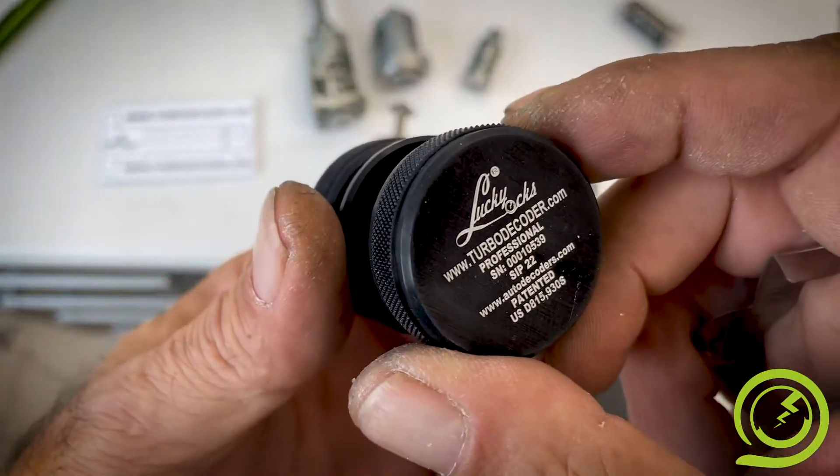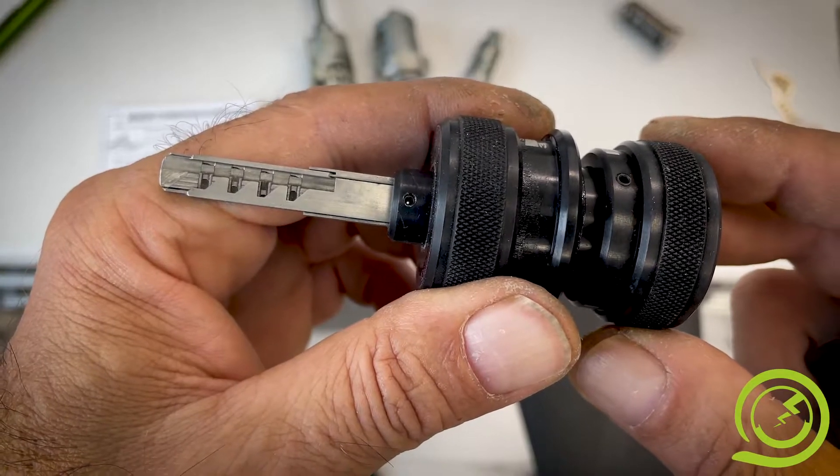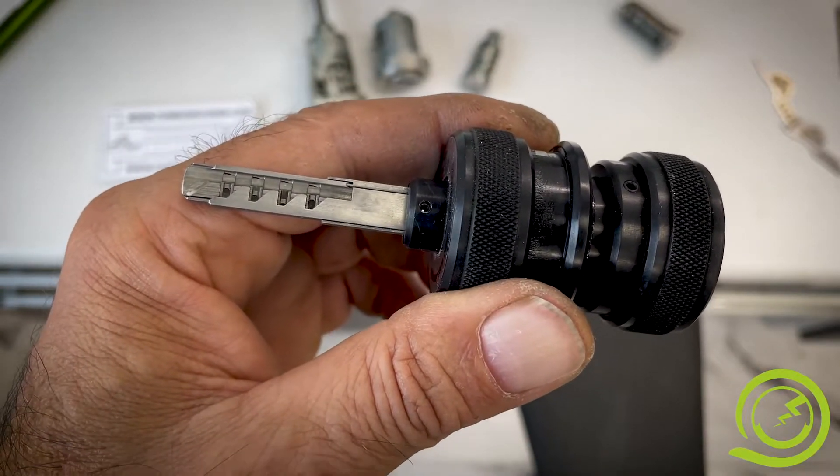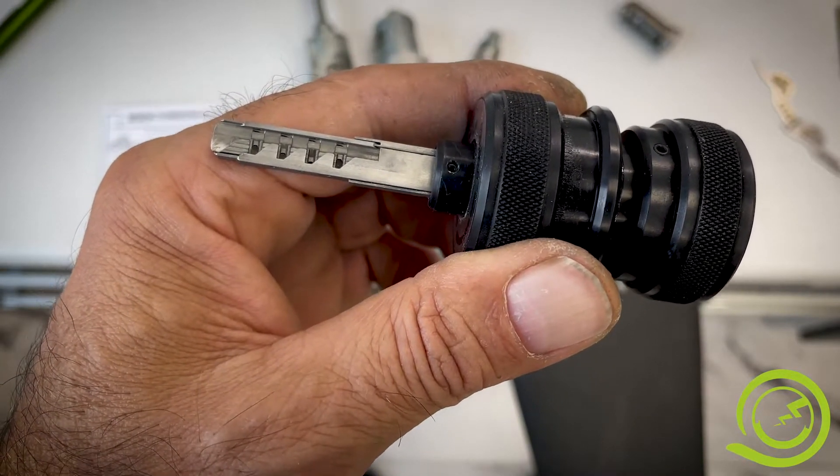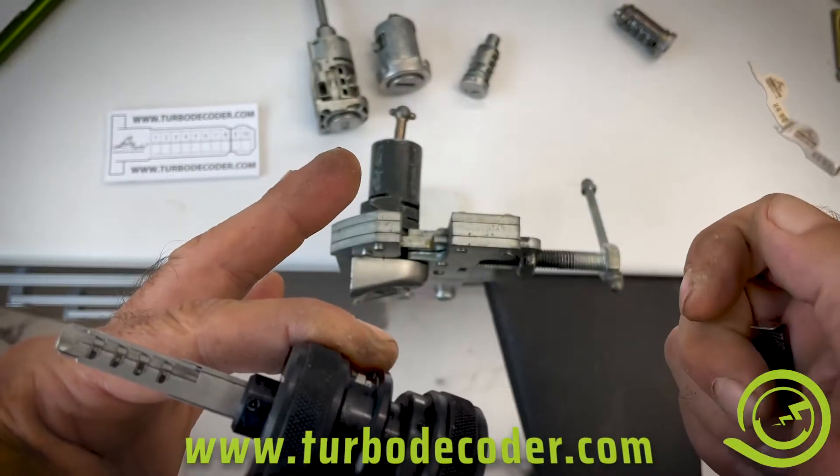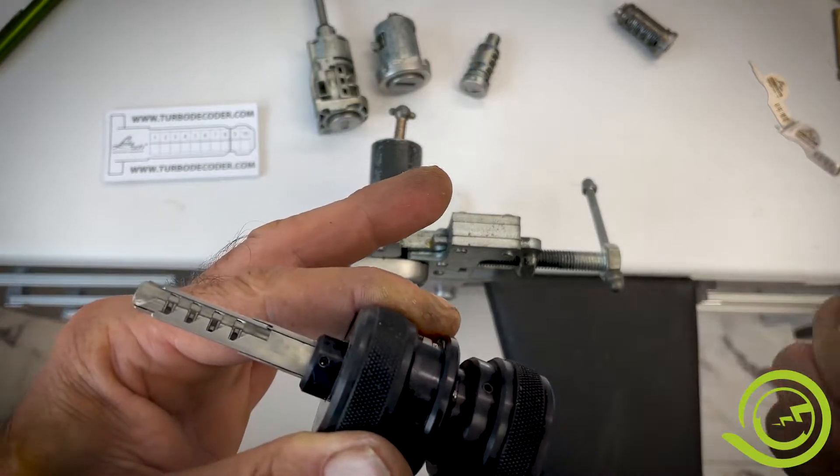On SIP 22, they are not numbers, but they are A, B, C, and D, where A is the maximum high pin and D is maximum deep. CNC key cutting machines recognize A, B, C, and D, not 1, 2, 3, 4.